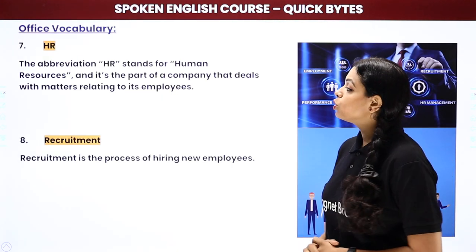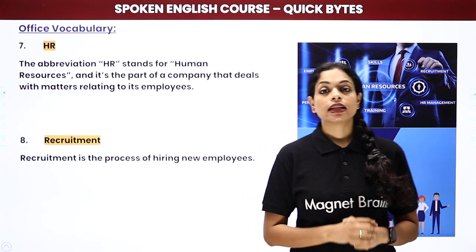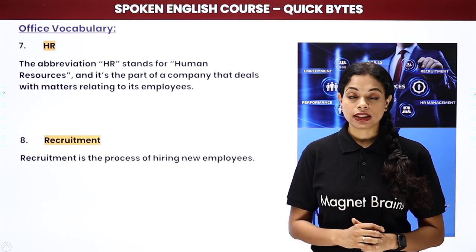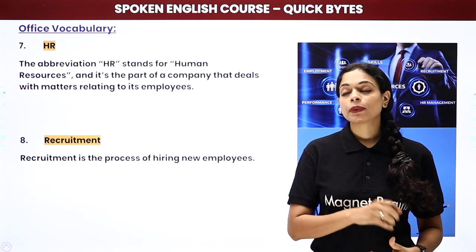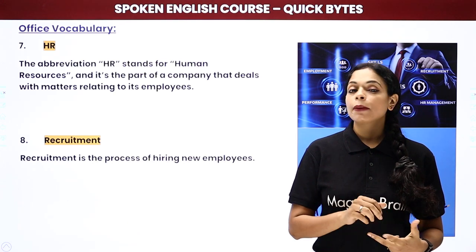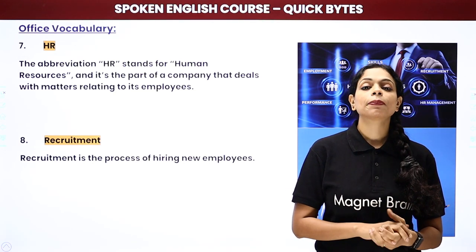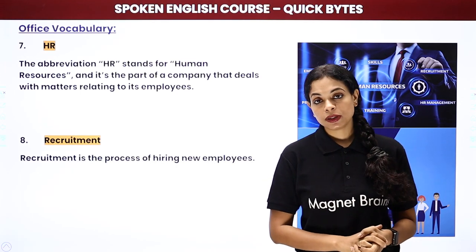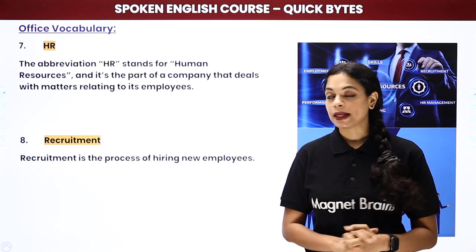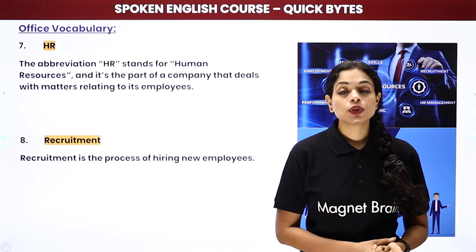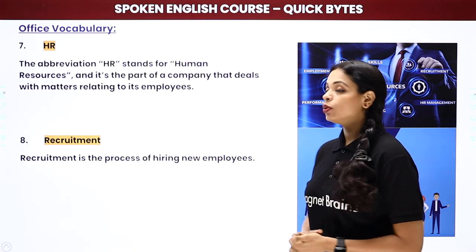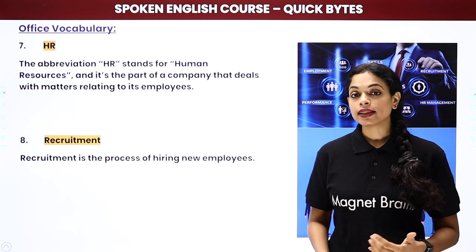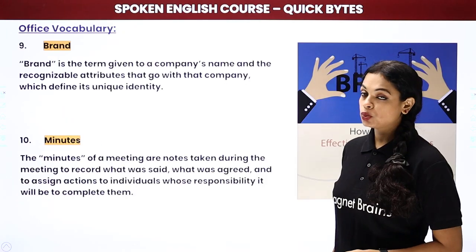Next is HR — human resources. This is an abbreviation. HR is the part of the company that deals with matters relating to its employees — salary issues, leave issues, medical emergencies. Employees go to HR for all these things. HR is the human resources department whose officials deal with employees. Then there is recruitment — the process of hiring new employees. The process of hiring new people is called recruitment.